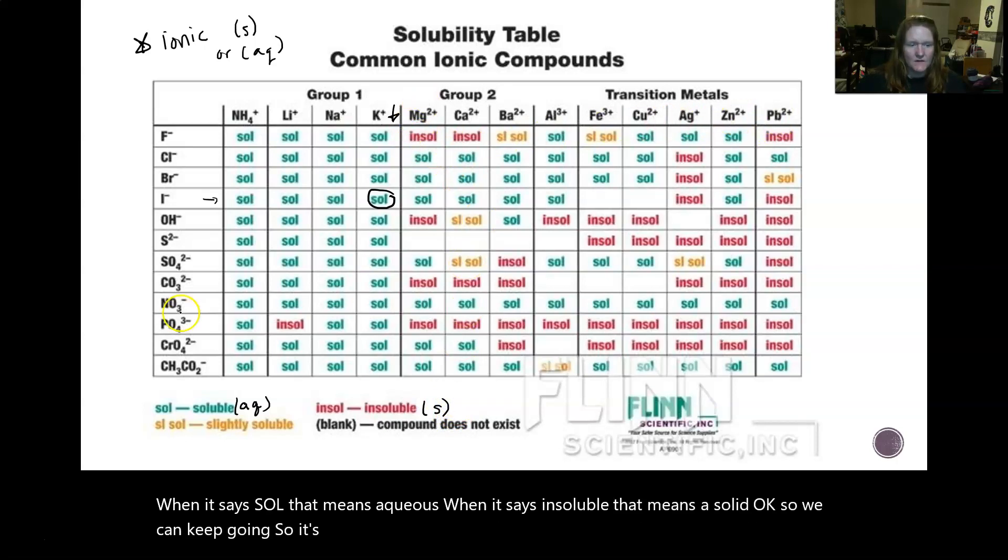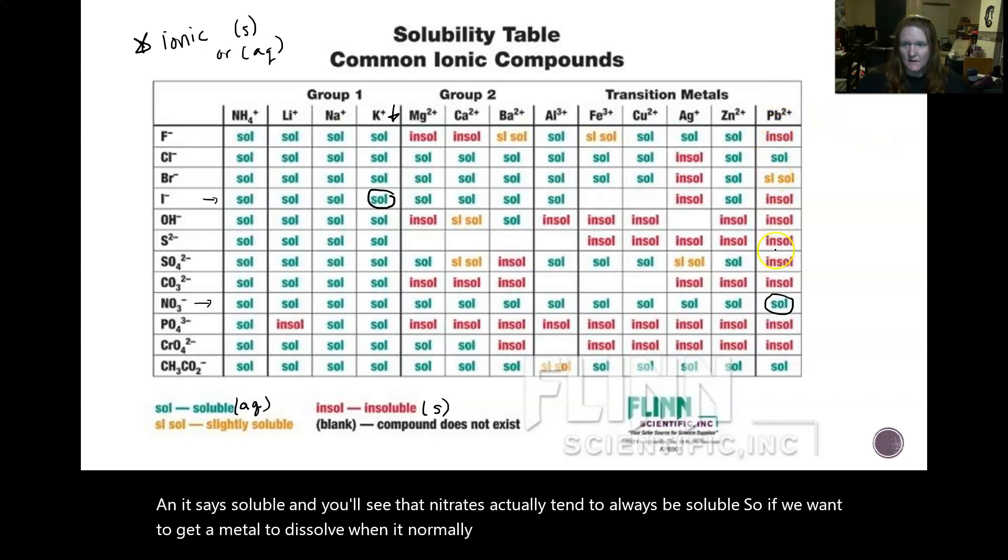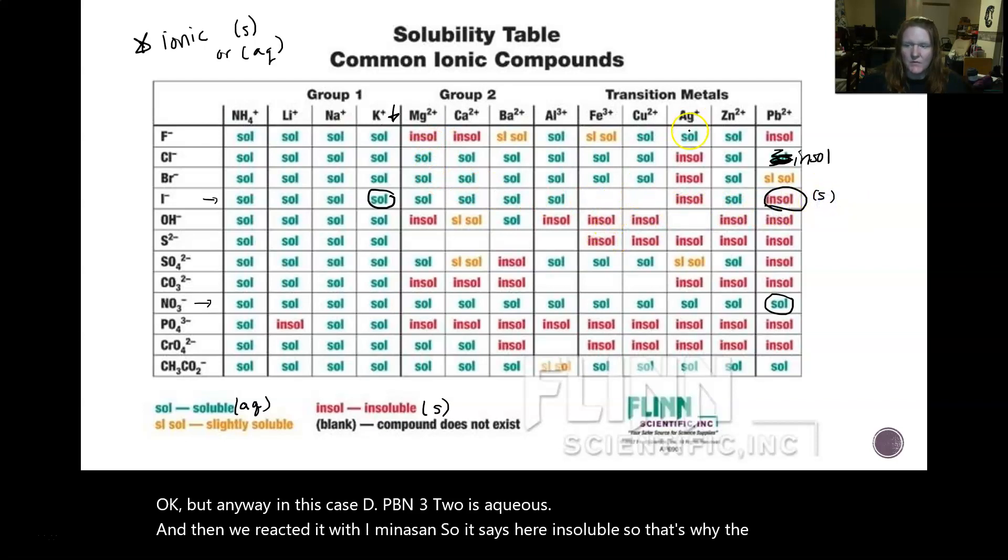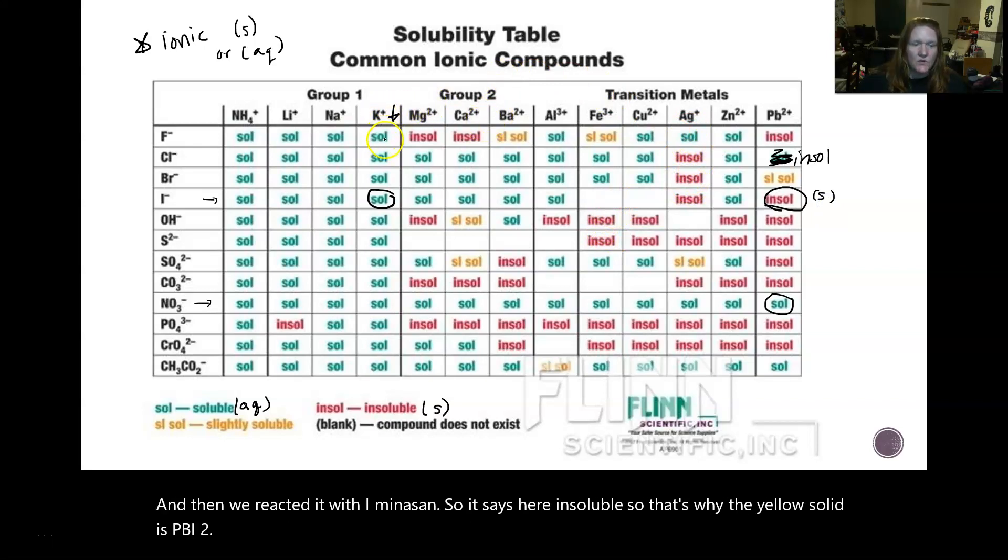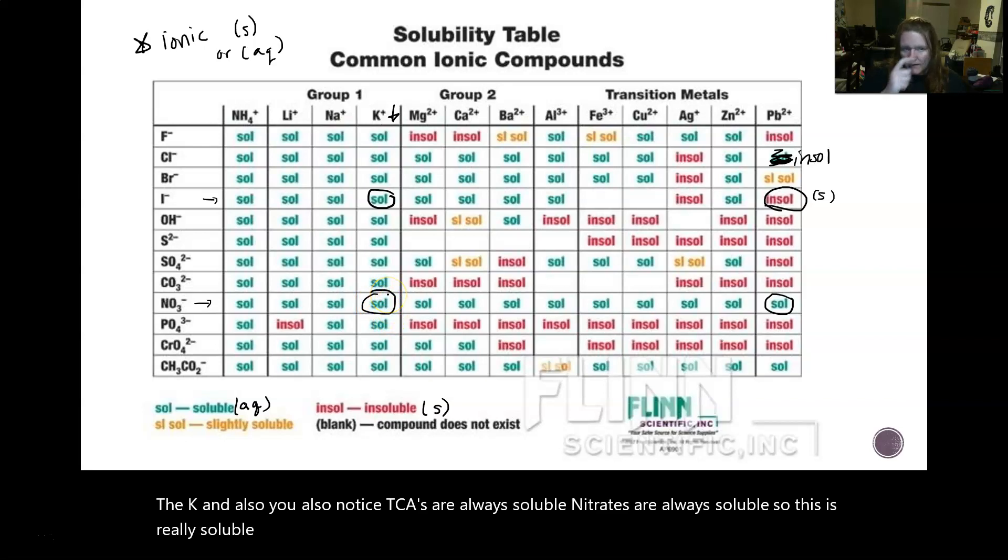We can keep going. So it's lead, and the nitrate is here, and it says soluble. And you'll see that nitrates actually tend to always be soluble. So if we want to get a metal to dissolve when it normally doesn't, like lead, we would put nitrate with it. Or you can make an acetate with it, and that will dissolve as well. But anyway, in this case, the Pb(NO3)2 is aqueous. And then we reacted it with I-, and so it says here insoluble. So that's why the yellow solid is PbI2. The KNO3, so you also notice Ks are always soluble. Nitrates are always soluble. So this is really soluble. So it's going to be aqueous.